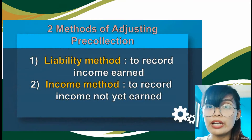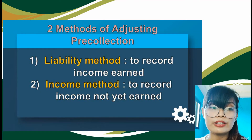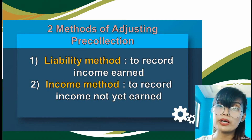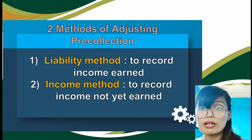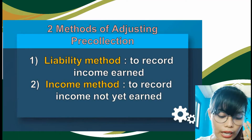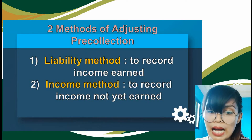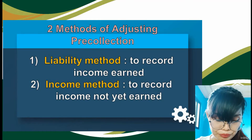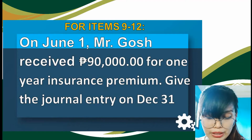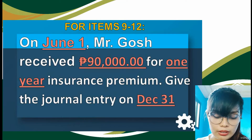Now let's proceed to the third and fourth transactions, which are under pre-collections involving unearned income in adjusting entries. There are two methods: the liability method, used to record income already earned — where you have received payment and rendered the service or delivered the product; and the income method, used to record income not yet earned — the amount of service or product not yet delivered to the customer.